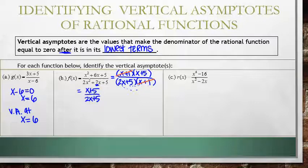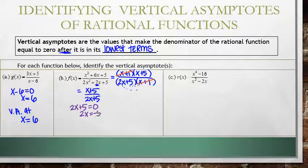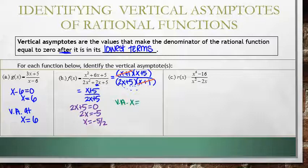Now that the function is in its simplified form — x plus 5 over 2x plus 5 — we can find the vertical asymptote. The vertical asymptote occurs when the denominator equals zero, which is when x equals negative 5 halves. So the vertical asymptote is x equals negative 5 halves.